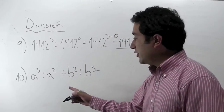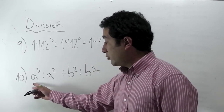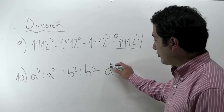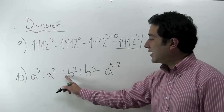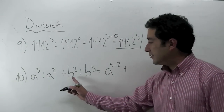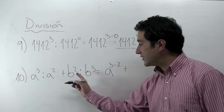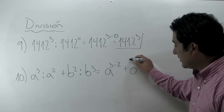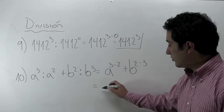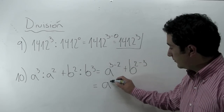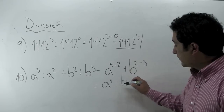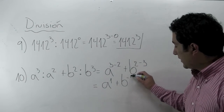En el ejercicio 10 pusimos letras, pero se cumplen las mismas propiedades. Conservamos la base y restamos los exponentes. Fíjense que aquí hay un más y los exponentes no son iguales, por lo tanto son operaciones distintas. También tenemos una división de potencias de igual base: conservamos la base y restamos los exponentes. ¿Cuál es el resultado? 3 menos 2 es 1. Más B: conservamos la base y restamos los exponentes, menos 1.